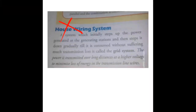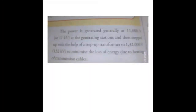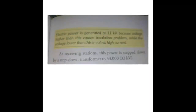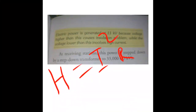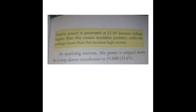This power is transmitted over long distances at higher voltage. The reason for transmitting at higher voltage is that when you supply at higher voltage, less current flows through the wire. We know that the heating effect is given by I²Rt, where I is the current. So if less current passes through the wire, there will be less transmission loss and less leakage of heat energy.